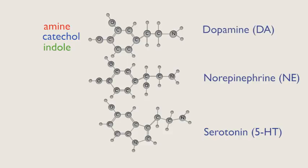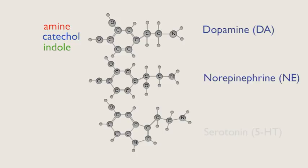Dopamine (DA), norepinephrine (NE), and serotonin (5-HT) are all known as monoamine transmitters. The portion of the chemical formula colored red is known as an amine group in organic chemistry. Each of these transmitters contains one amine group, hence the name monoamines.